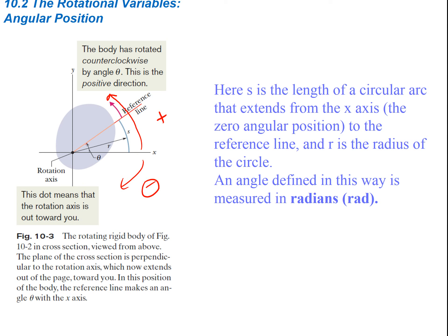Going counterclockwise is positive; going clockwise is negative. Here, s is the length of a circular arc extending from the x-axis. Our equation is theta equals s over r, where theta is the angle — measured in degrees or radians, though we'll very often use radians. s is the arc length, the distance traveled, and r is the radius measured from the center of the rotation axis to the arc. Since it's arc length divided by radius, it's meters over meters — a unitless value we call radians.